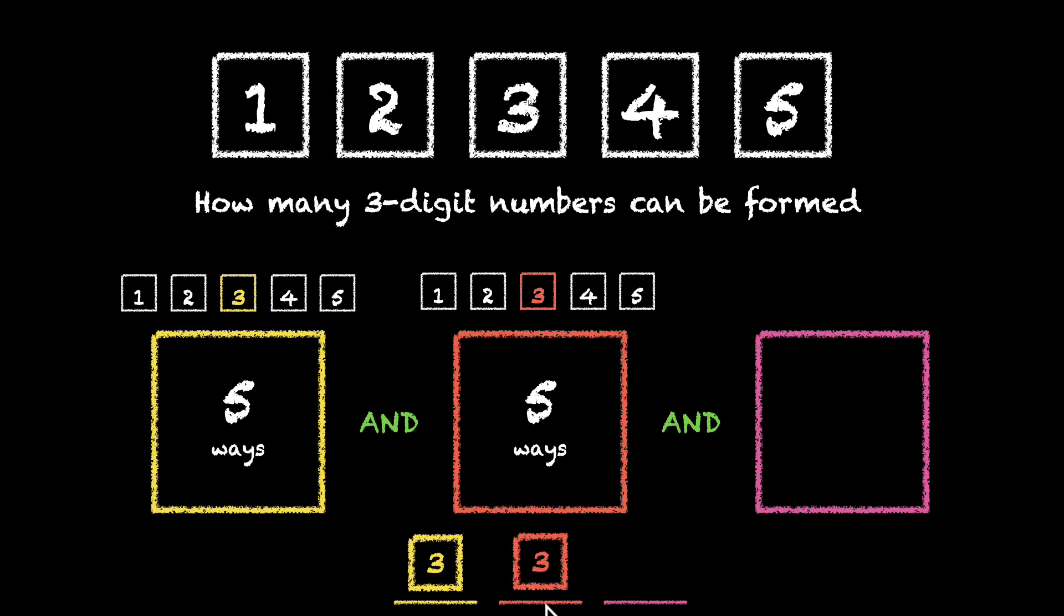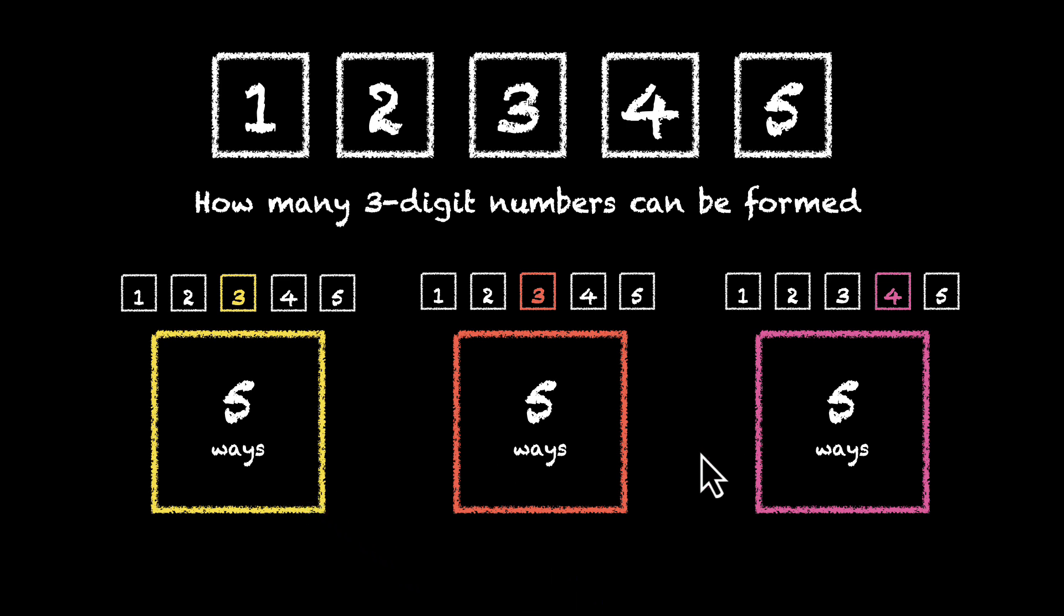Let's say we pick 3 again. So 3 comes here. How many ways to fill this box? We have 1, 2, 3, 4, 5. All 5 are available. So even this box can be filled in 5 ways. Let's say this time we pick 4. We get a number 334. But again, this is not important. What's important is the number of ways. How many ways to fill this one? 5. This one? Again 5. And because we're doing all three of them, the total number of ways will be 5 times 5 times 5. That's going to be 5 cubed. That's 125 ways.